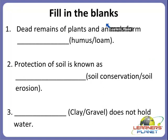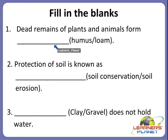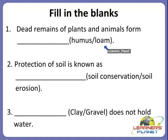I will read the question for you and you have to guess the correct answer from the options given in the bracket. The first one is: dead remains of plants and animals form dash. What do they form? Do they form humus or loam?